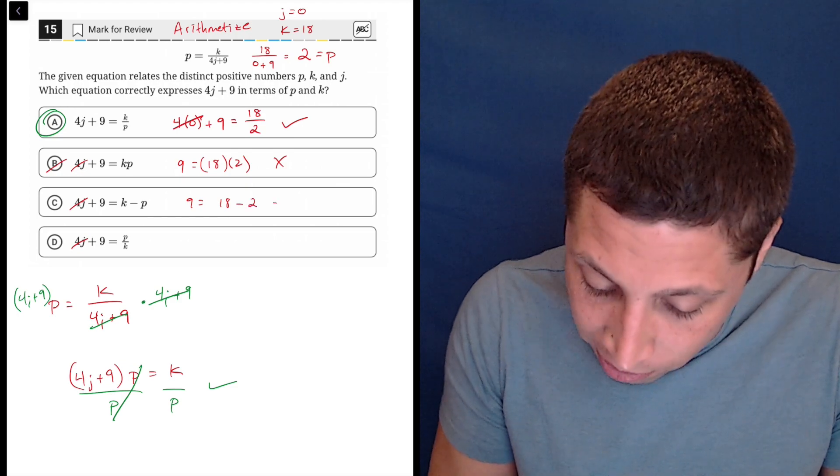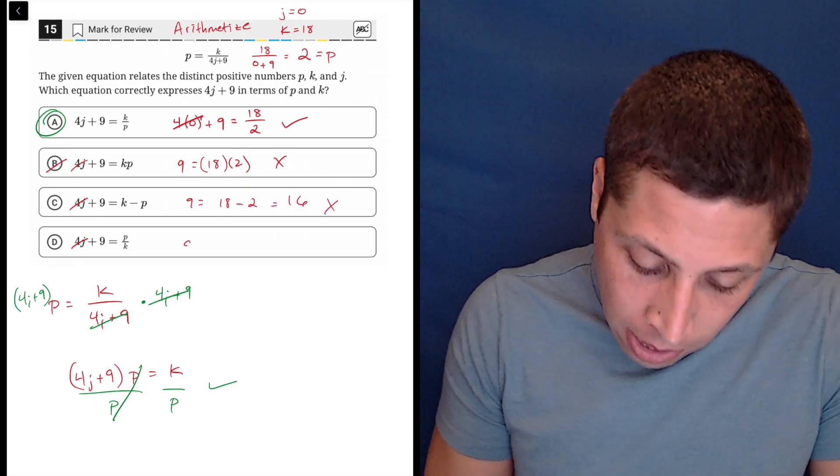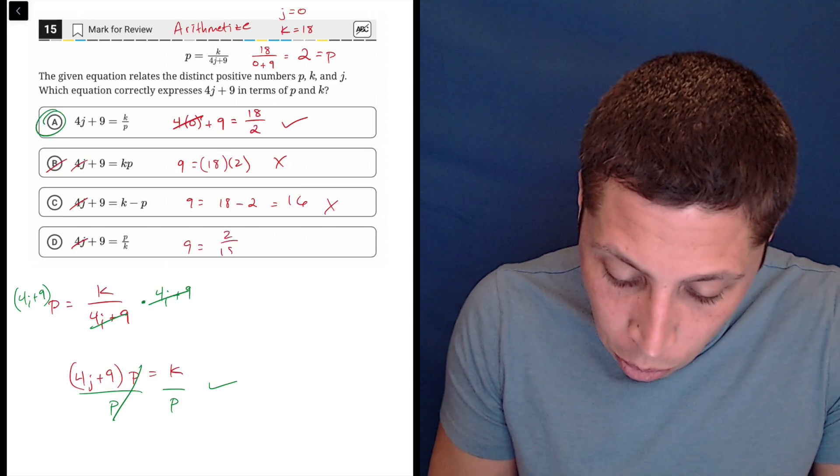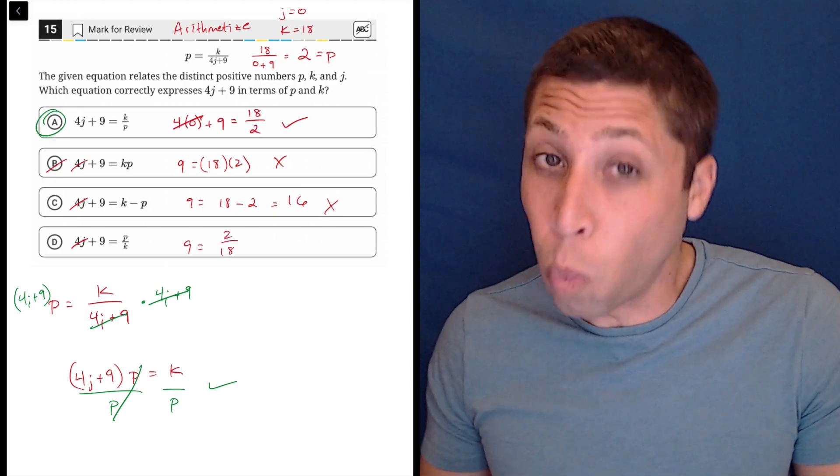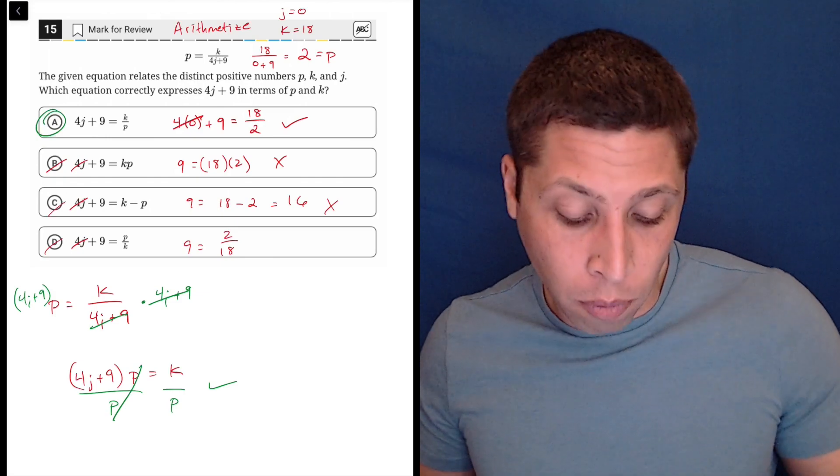9 is equal to, k is 18, p is 2, so that would be 16. So no, 9 is not equal to 16, and then 9 is equal to 2 over 18, well, 2 over 18 is 1 ninth, so it seems kind of close, but it's definitely different, and that would prove also that A is right.